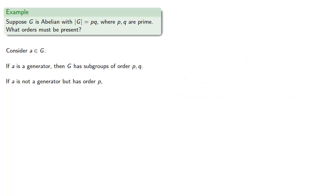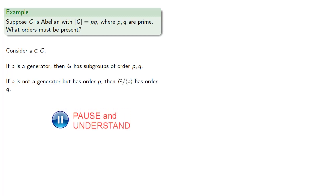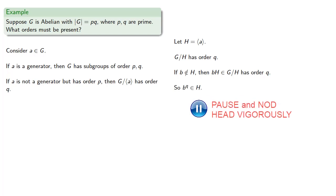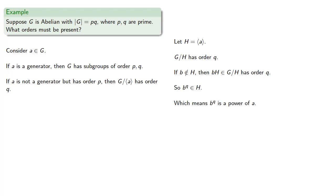Now suppose a is not a generator but has order p. Then G mod the group generated by a has order q. Let H be the subgroup generated by a; G mod H has order q. And if b is not in H, then the coset bH in G mod H must have order q, and so b to the power q must be an element of H. Which means that b to the power q is a power of a.